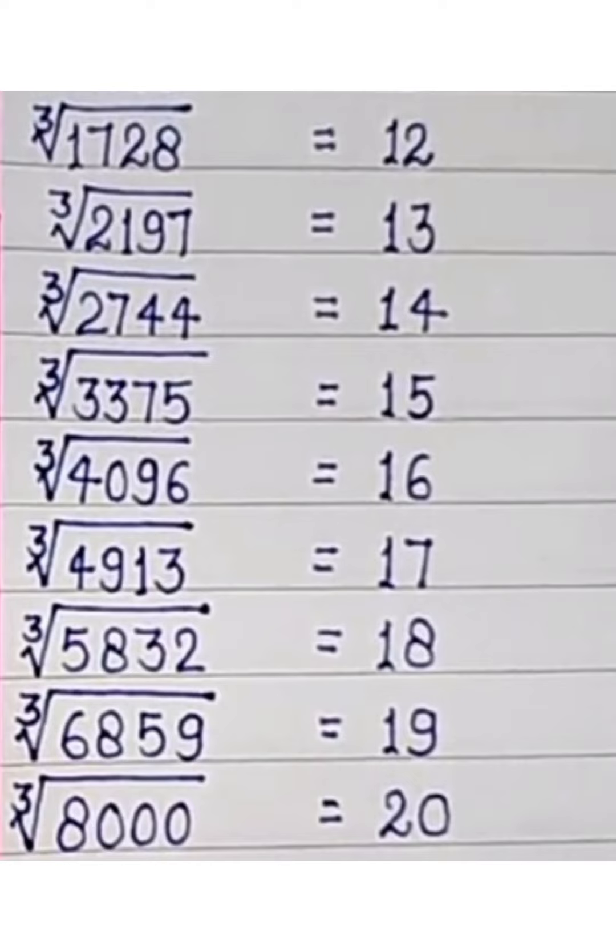18 cube root is 5832, 19 cube root is 6859, 20 cube root is 8000.